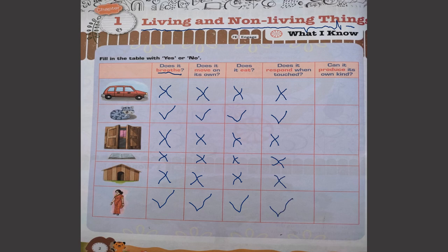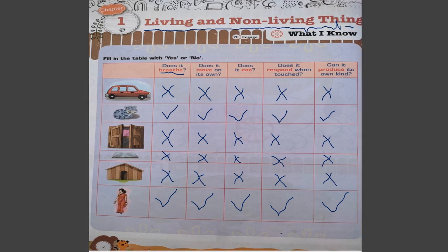Next: can it produce its own kind? Car does not produce its own kind. Cat can produce. Window, house, and book do not produce, whereas a lady can produce her own kind. We can see most answers are 'yes' for cat and lady, and 'no' for car, window, book, and house. This is the first page.